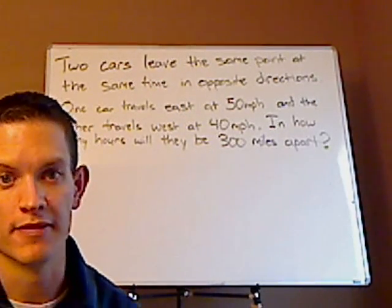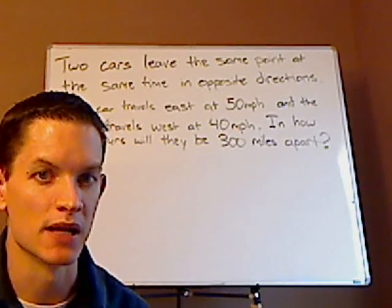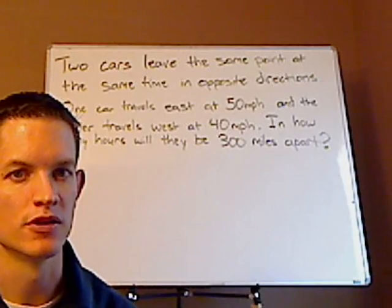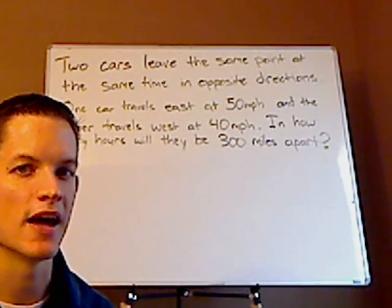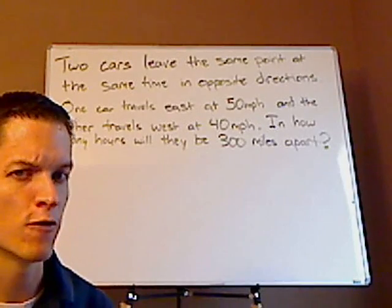You have two cars leave at the same point at the same time and they go opposite directions. One car travels east at 50 miles per hour and the other car travels west at 40 miles per hour.